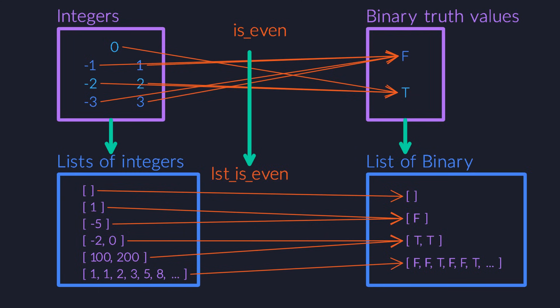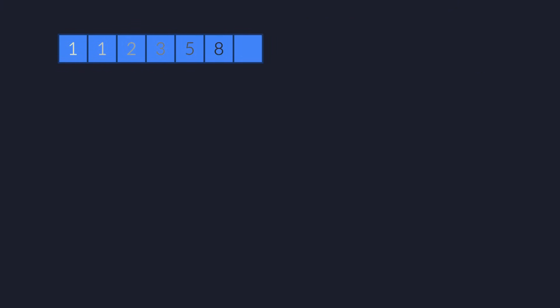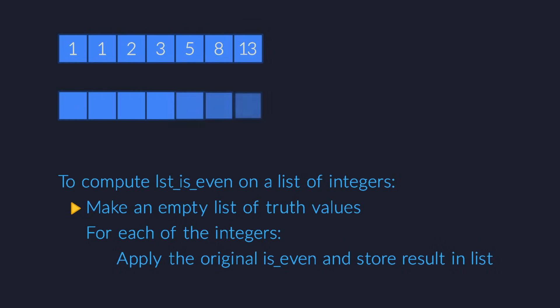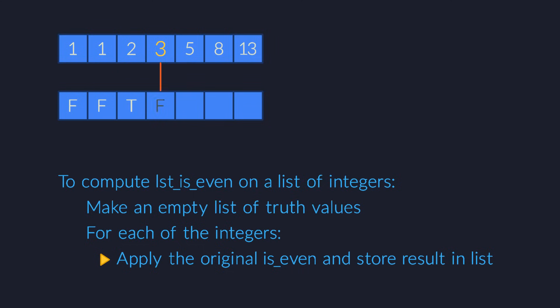It turns isEven from a function that takes a single integer into a new function that runs across an entire list of integers, converts each into a binary truth value using the original isEven function, and then stores those truth values into a new list.